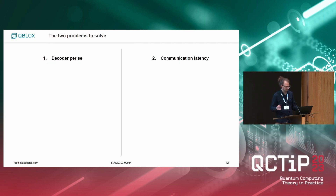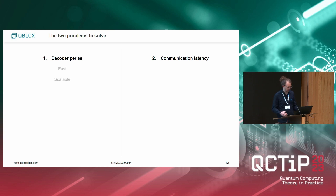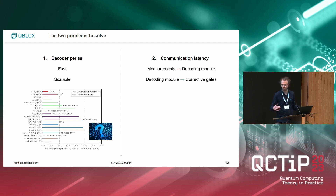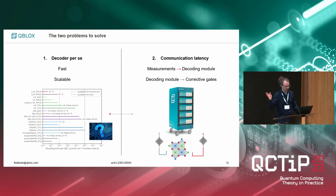Summarizing, there are two main contributions to the total time for decoding. One is the decoding time per se — it's clear that you need to be fast, scalable, and still accurate. We have a review of the current literature in the paper. On the other side, there is the communication latency of measurement outcomes to some decoding module in the stack, and then feedback back to corrective operations based on the decoding results. That's where we really see our expertise at QBlocks, and where we want to collaborate with decoder developers.